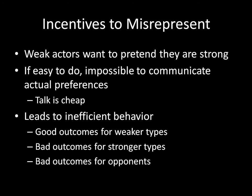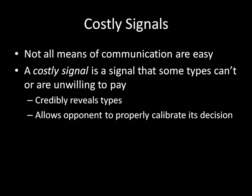Fortunately, we're not hopelessly lost. There are some ways that you can effectively communicate information in international relations, but it requires differing ease in being able to communicate that information. Not all forms of communication are as easy as just asking whether someone is weak or strong and having them answer. In contrast, we could think about costly signals. A costly signal is a signal that some types cannot pay or are unwilling to pay. When you have that type of signal being sent, it can credibly reveal types — or more accurately, it can demonstrate that you aren't the most unresolved or weakest of types. That allows the opponent to properly calibrate its offer or decision when facing the type revealed through the costly signal.